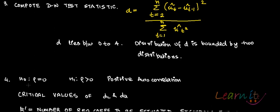For testing positive autocorrelation: the null hypothesis is that there is no autocorrelation, and the alternative hypothesis is that there is positive autocorrelation, so ρ > 0. You look up the critical values D_L and D_U from the Durbin-Watson table.